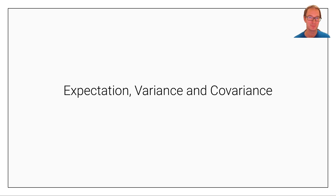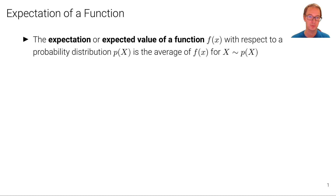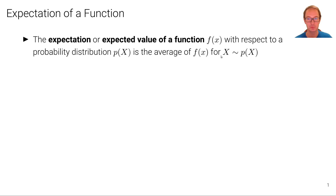Let's now consider some fundamental properties of random variables or functions of random variables. In particular, the first two moments of those, called expectation and variance, or covariance in the multivariate case. The expectation or expected value of a function f of x with respect to a probability distribution p of x is the average of f of x for samples drawn from that distribution.